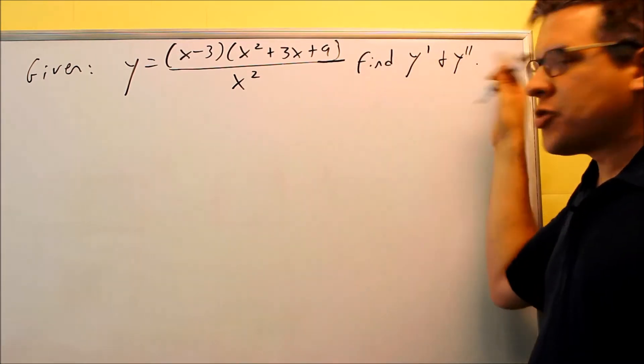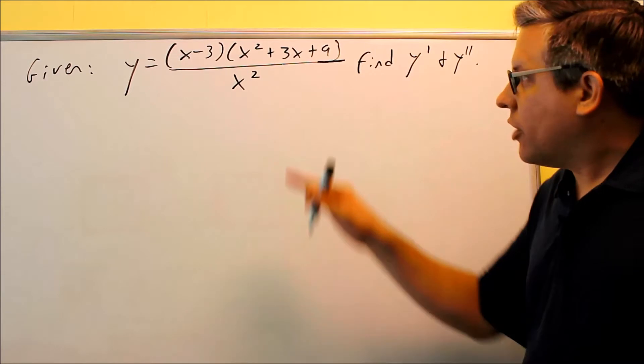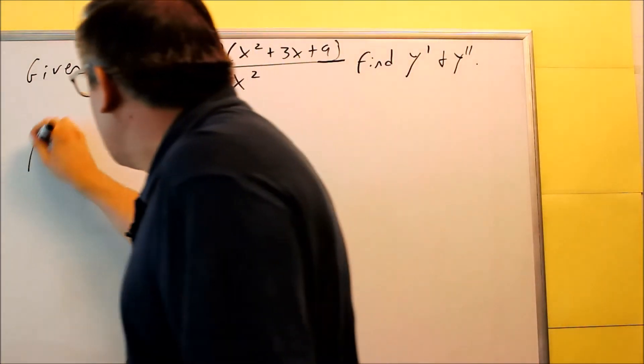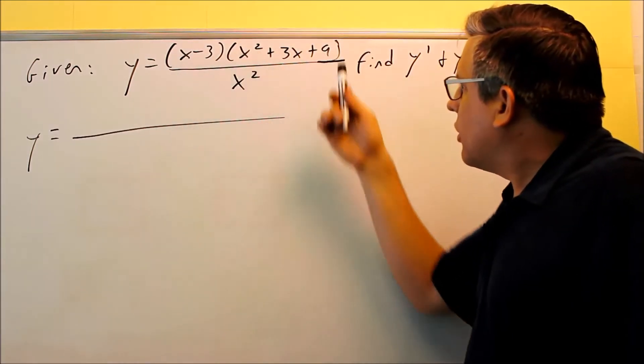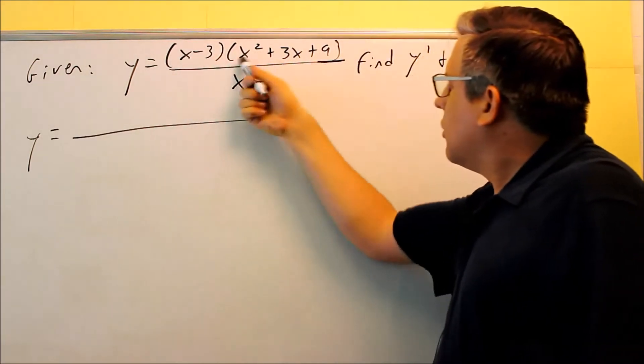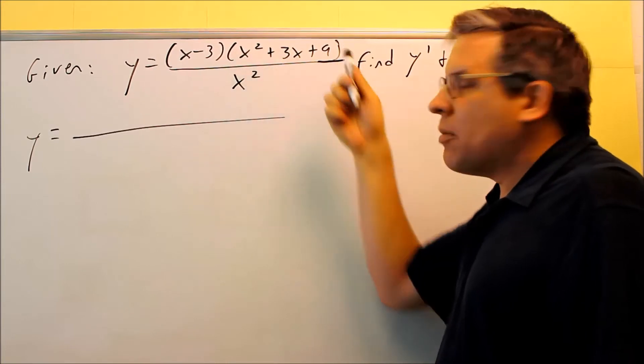So before I do any first or second derivatives, first I'm going to go ahead and just do a simplifying step. The very first thing I want to do is I'm going to foil the top. So I'll take x times everything inside here, so x times all three of these, then negative three times all three of these.